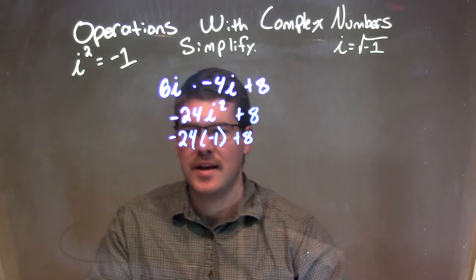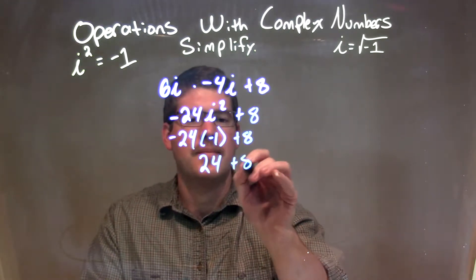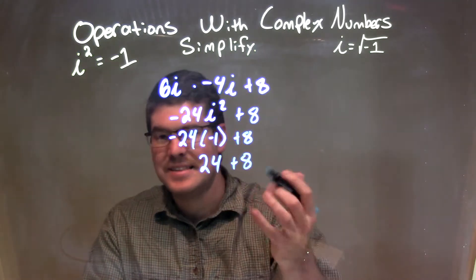Well, negative 24 times negative 1 is positive 24. So we have positive 24 plus 8. 24 plus 8 is just 32.